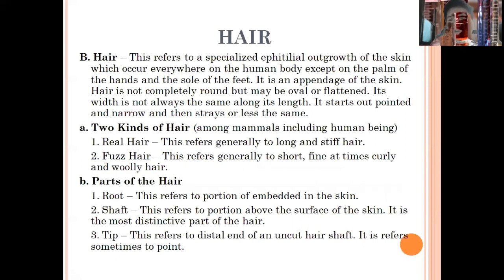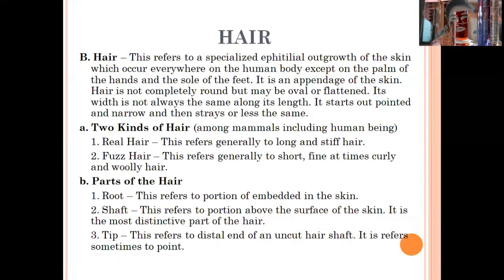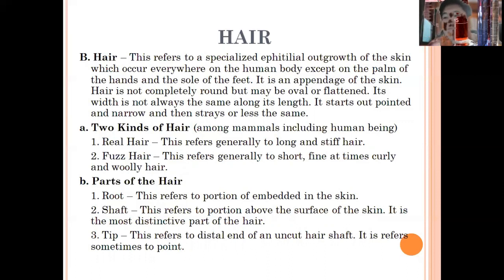For the definition of hair: it is a specialized epithelial outgrowth of the skin that occurs everywhere in the human body except on the palms of the hands and the soles of the feet. It is an appendage of the skin. Hair is not completely round but may be oval or flattened, and its width is not always the same along its length. It starts out pointed and narrow, then stays more or less the same.